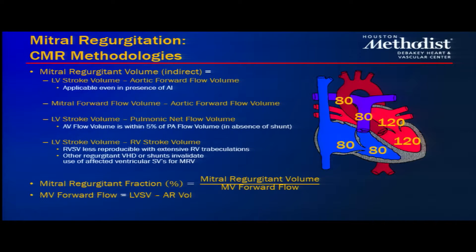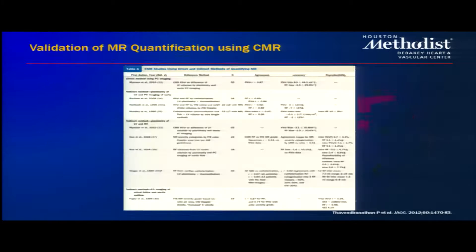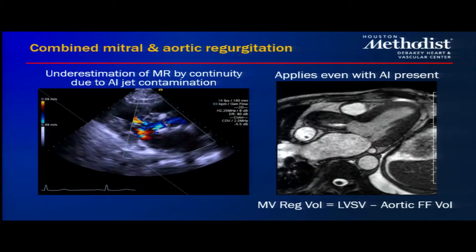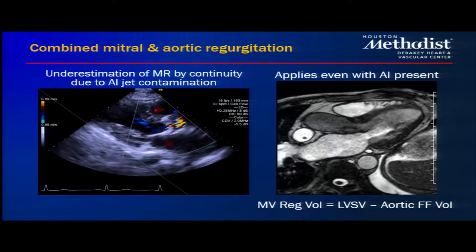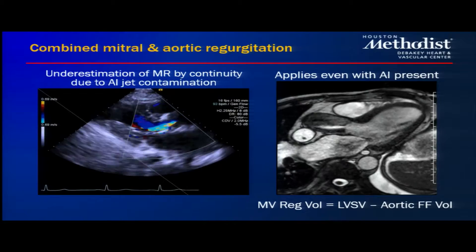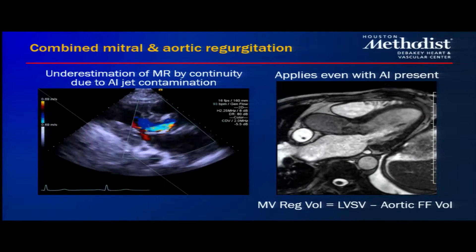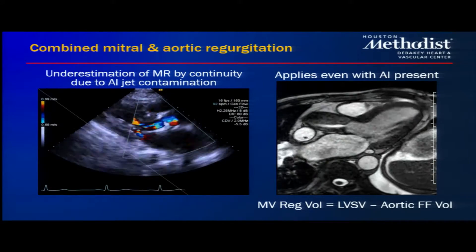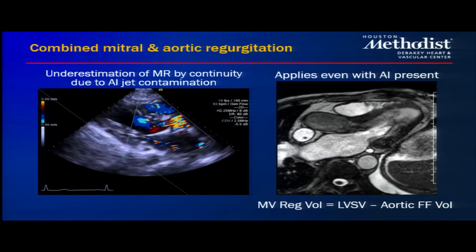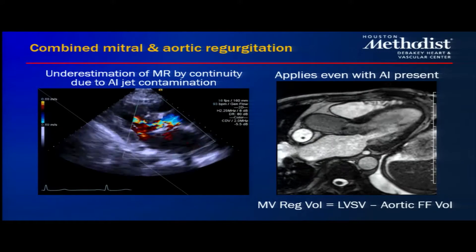We can use various other flow and volume measure combinations to obtain the same information. Importantly, by accounting for aortic regurgitation flow, we can still accurately quantify mitral regurgitant volume even in the presence of aortic insufficiency. With Doppler echocardiography, the mitral flow is unfortunately contaminated by the AI jet, leading to underestimation of MR regurgitant volume — whereas CMR can still carry out the computation with reproducible and accurate volume measurements.